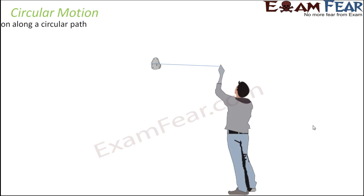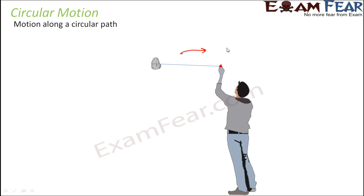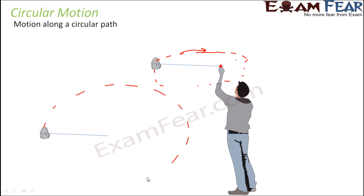Another type of motion is circular motion — when an object moves along a circular path. Think of this common example: take a stone, tie it to a thread, hold the thread in your hand, and start spinning it. As you give it some force, you will see that it starts moving in a circular path. If you look at this movement from the top, you can see it is moving in a circular path. This type of motion is known as circular motion.